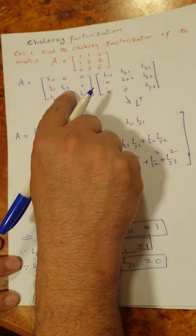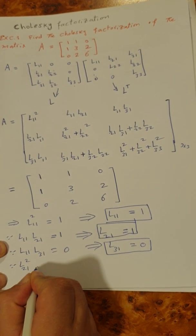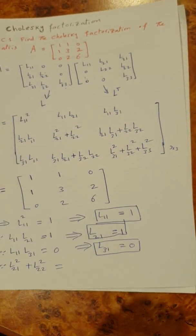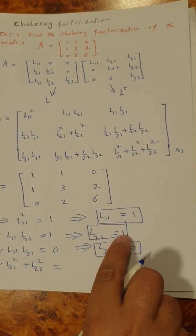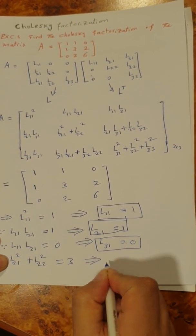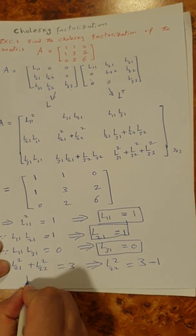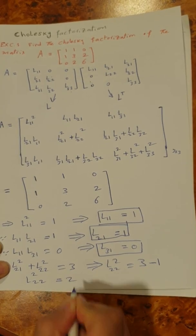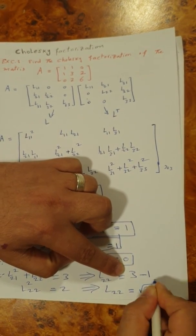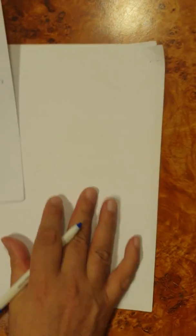To find L22, we use the relation L21 squared plus L22 squared equals 3. Since L21 equals 1, we have L22 squared equals 3 minus 1, which equals 2. Taking the positive square root gives L22 equals the square root of 2. So this element of the matrix L equals √2.